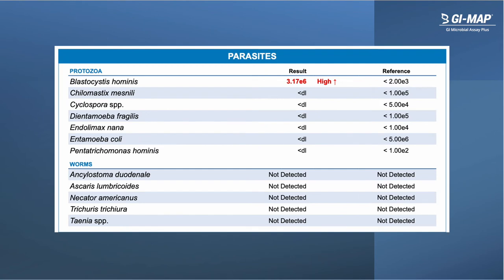On page four of GI Map you'll find a list of additional gastrointestinal parasites including protozoa and worms. Protozoa are single-celled eukaryotic microbes commonly found in contaminated food and water sources, and are more likely to colonize the gut in patients with bacterial dysbiosis and digestive dysfunction. Infections with protozoa may result in symptoms such as abdominal discomfort and loose stools or diarrhea, but many patients can remain asymptomatic. GI Map also includes a number of parasitic worms, which are relatively rare in industrialized countries but when present may result in gastrointestinal symptoms.